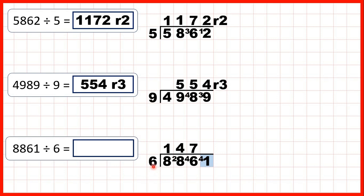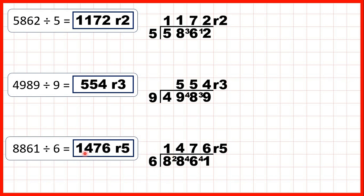Now we have 41 divided by 6. The closest number to 41 in the 6 times table that's not more than 41 is 36 — we can't use 42 because that would be too many. So 6 times 6 is 36, but then from 36 we need to add 5 to get to 41, giving us 6 remainder 5. Remember when we're dividing, the remainder can't be more than the divisor. So here, because we're dividing by 6, our remainder can only be 1, 2, 3, 4, or 5. This is a good check to make sure you haven't made any calculation errors. So our answer is 1,476 remainder 5.